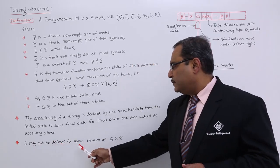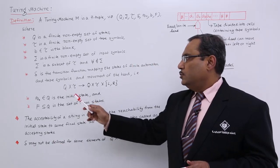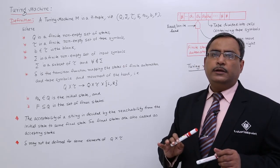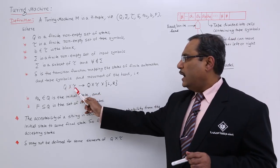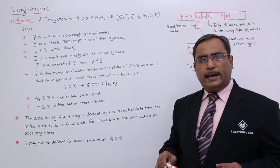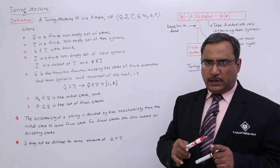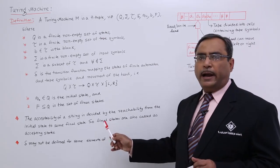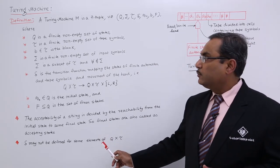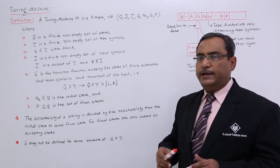Delta may not be defined for some elements of Q cross tau. For example, suppose we have three Q elements and four tau elements — then Q cross tau can have 12 combinations, but for certain combinations delta might not have been defined. This is part of the definition of the Turing machine.